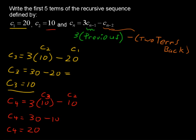We keep going on with that, and C sub 5 equals 3 times the previous term, that's C sub 4, and C sub 4 is 20. We just found that. Minus two terms back, so minus C sub 3, and that C sub 3 was 10. So we have C sub 5 equals 60 minus 10, so C sub 5 equals 50.